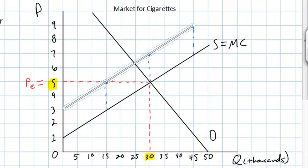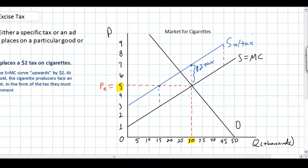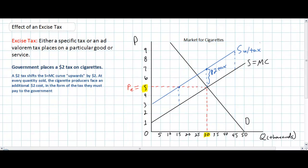As can be seen, the supply of cigarettes has decreased due to the tax. The marginal cost of cigarettes has increased by $2 at every quantity. The vertical distance between the original supply curve and the new supply curve represents the actual amount of the tax. We can call this new supply curve 'supply with tax.' Now let's examine the impact this $2 tax has on equilibrium quantity, equilibrium price, and who bears most of the burden — whether consumers or producers — which depends on their responsiveness to the tax.